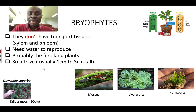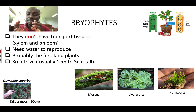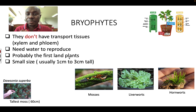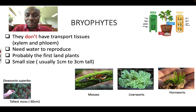Scientists believe that bryophytes are probably the first land plants. Life started in water and over many millions of years moved to land, and scientists believe bryophytes were the first land plants which evolved. There are three types of bryophytes: number one, mosses; number two, liverworts; number three, hornworts.